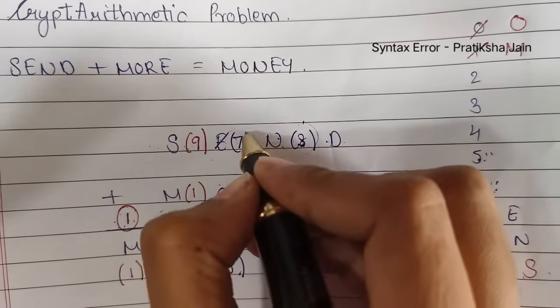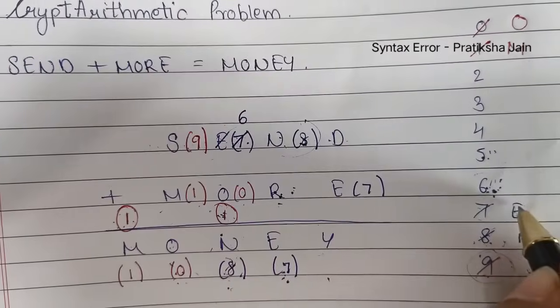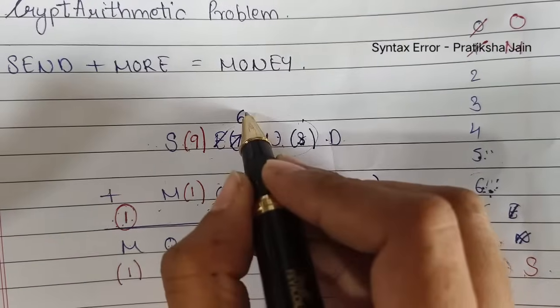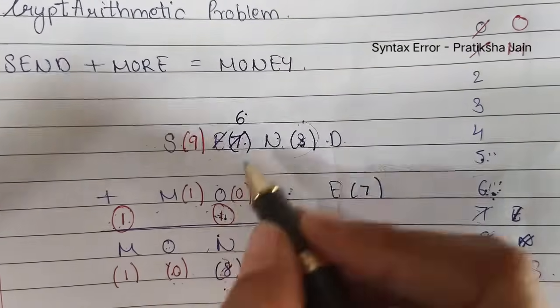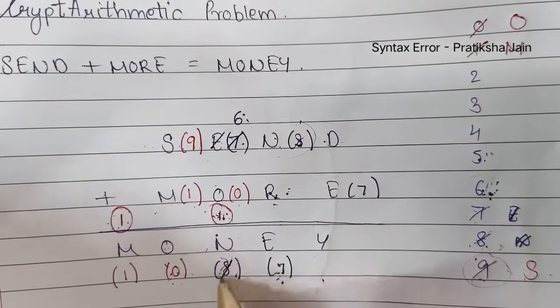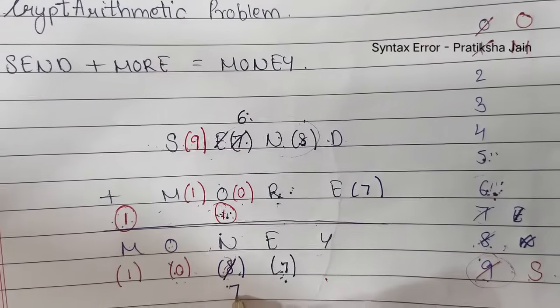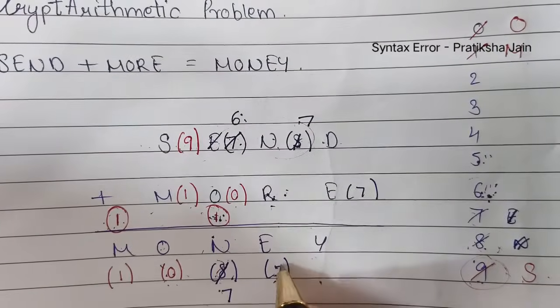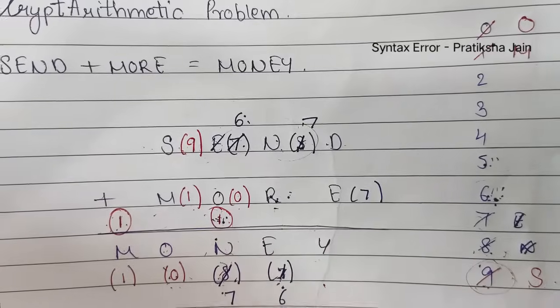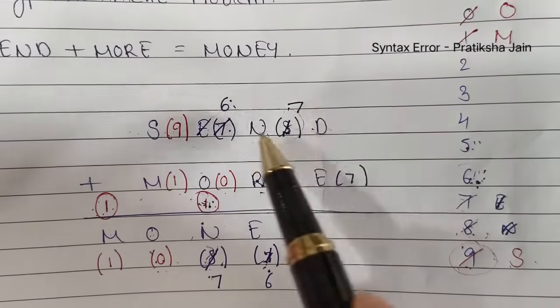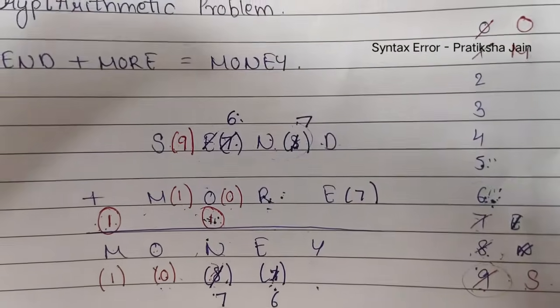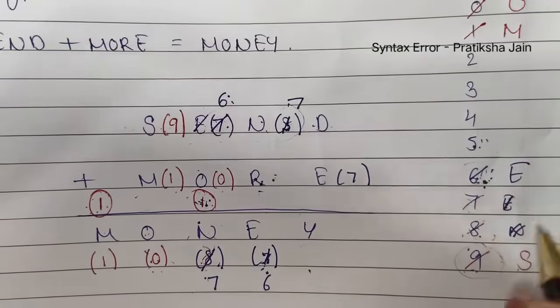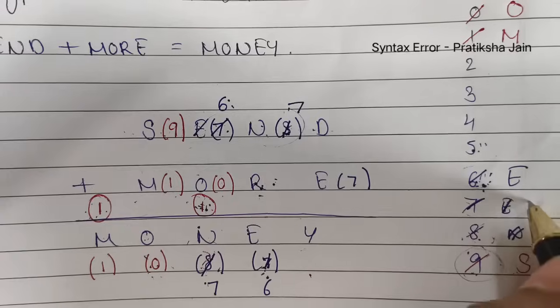So let us consider E as 6. Let us keep the carry. So 6 plus 1 gives us 7. Now my N became 7. And E became 6. E became 6 and N became 7.